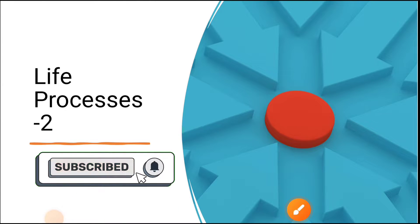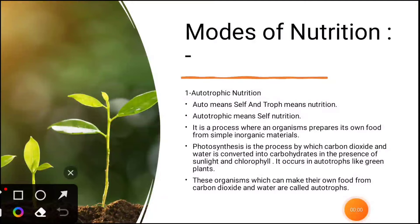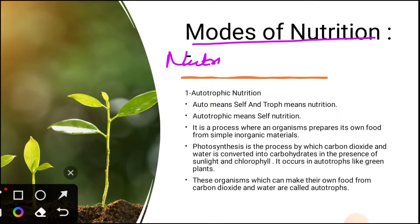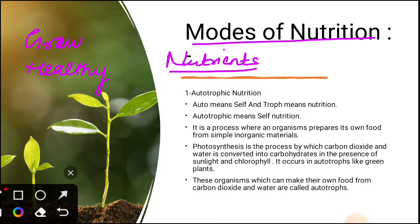Welcome to our channel. Today we are going to start the next part of this chapter. First is mode of nutrition. Let's understand the term: nutrition is the process of obtaining nutrients and utilizing them to grow, stay healthy, and repair any damaged body part. Nutrients are what we get in our food, like carbohydrates, vitamins, minerals, etc., and these components are necessary for living organisms to survive.